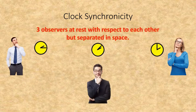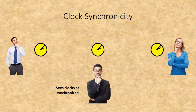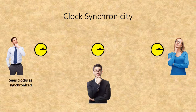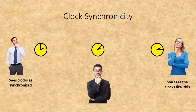Consider three observers at rest with respect to each other but separated in space, each with a clock. If the guy in the middle sees the three clocks as synchronized, then the guy on the left sees them out of sync — the other two behind his, with the one on the right further behind than the one in the center. The woman on the right sees the other two clocks behind hers, with the one on the left being further behind than the one in the center.